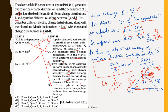In List 2 we have five charge distributions and in List 1 we have the E-vs-D dependence. Checking the options: P (E independent of D) matches 5; Q matches 3; R matches 1; S matches 2. So option 1 is the correct answer for this matching question.